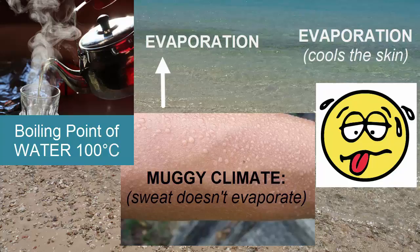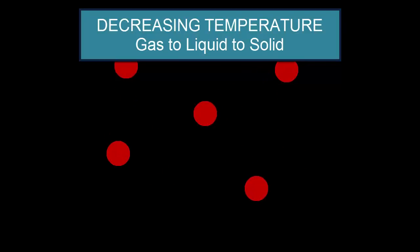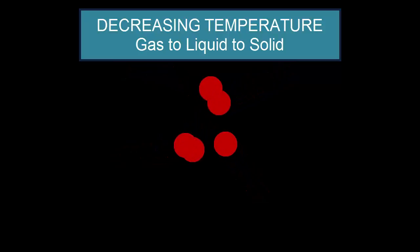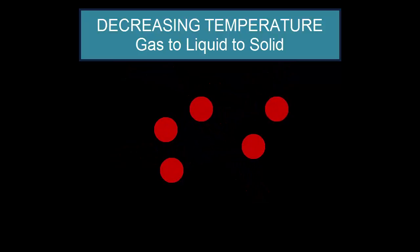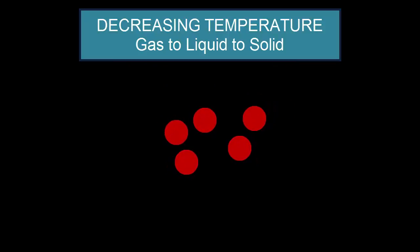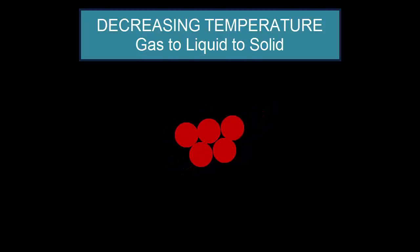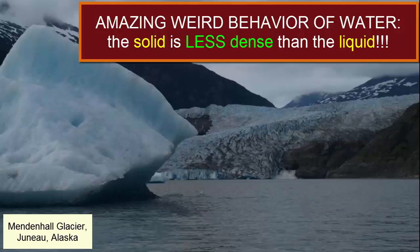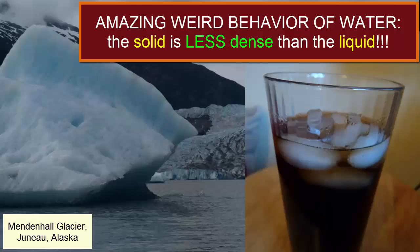We'll talk more about that later when we discuss relative humidity. For most normal substances, as heat is removed from the molecules, they are able to get closer together and become denser, and the solid form is the most dense form. However, water behaves much differently, as we know well from having our solid ice cubes float atop our liquid soda. The solid form of water, ice, is less dense than the liquid form — why? The shape of the water molecule, of course.